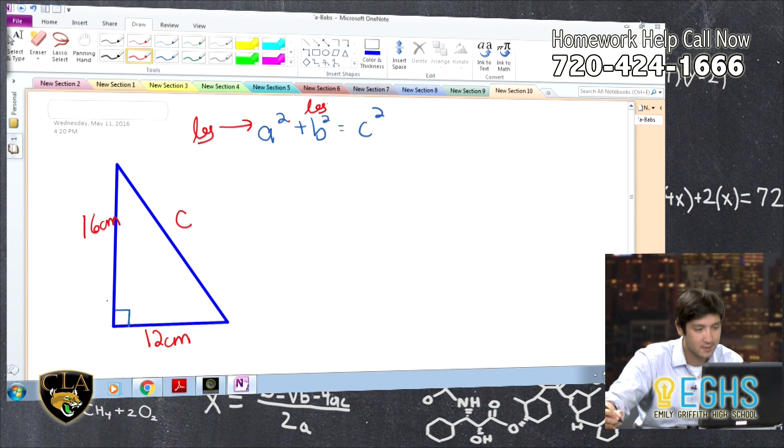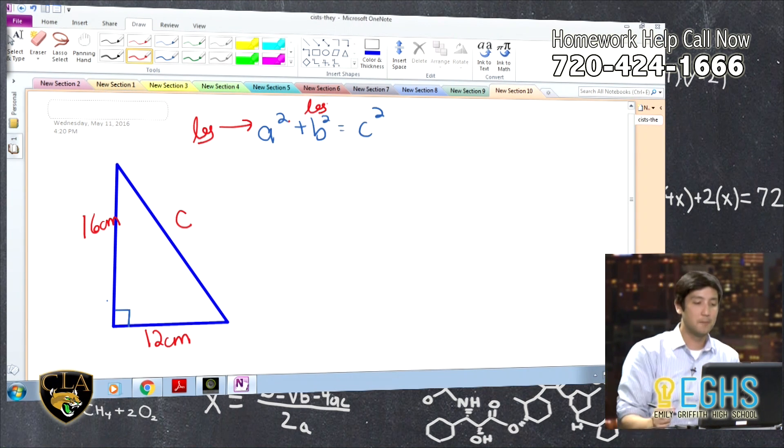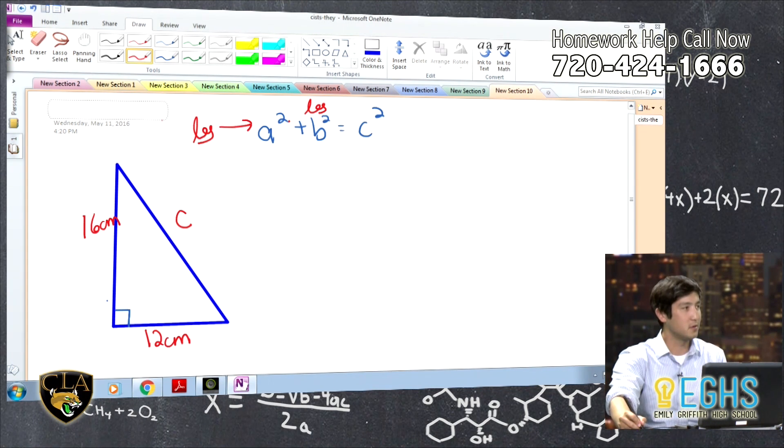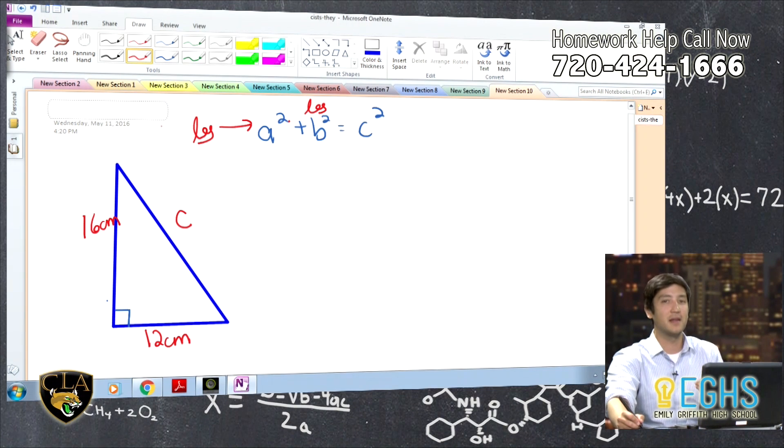Like this is a leg, this is a leg. So if you remember parts of a right triangle, we have two legs, and then we have the hypotenuse. And the hypotenuse is just the longest leg. It's the longest because it's straight across from the 90-degree angle, the right angle.